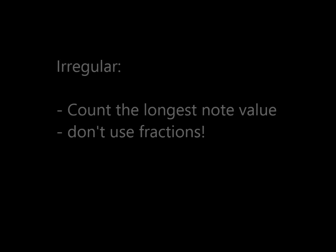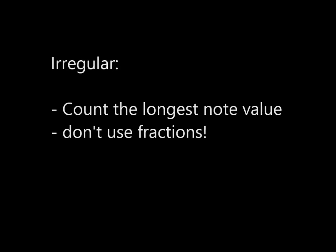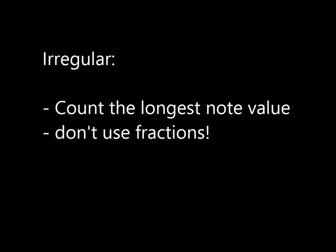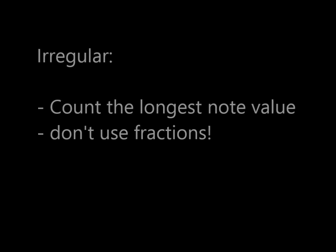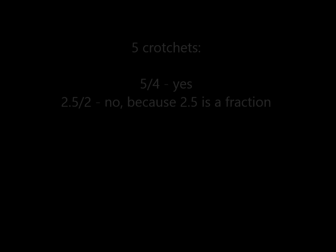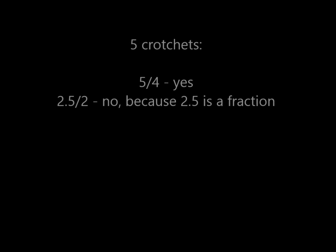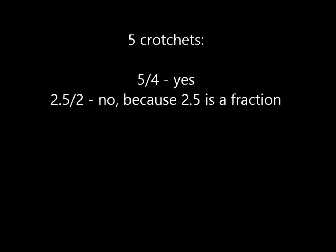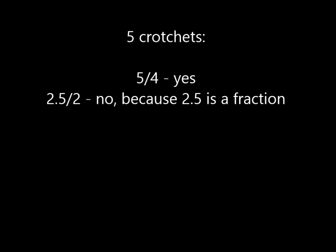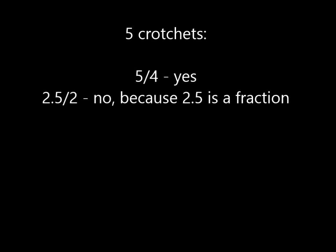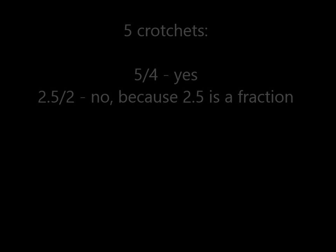But what is the time signature? What do we count? Is it ten quavers, ten eight? Is it five crotchets, five four? Or could it be two and a half minims? Well, with irregular time, the best thing to do is to count the longest note value that you can, but don't use a fraction as the top note. So in this case, we can't count minims because that would mean a fraction as the top note, two and a half. So the next longest note we can count is crotchets, meaning that the time signature here is five four.